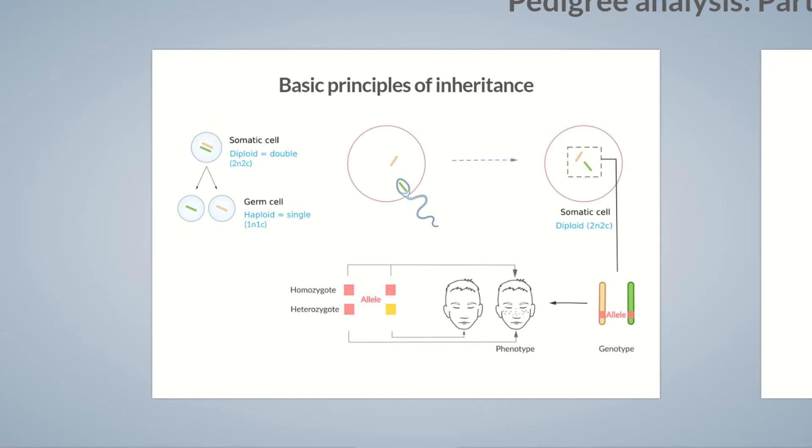The allele that finally determines the phenotype of the trait in a heterozygote is dominant and is represented by an uppercase letter. The trait of the allele that isn't visible in the phenotype is termed recessive and represented by a lowercase letter.